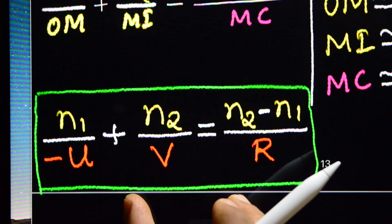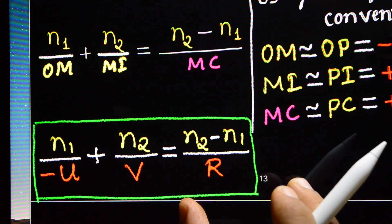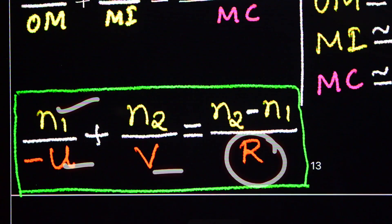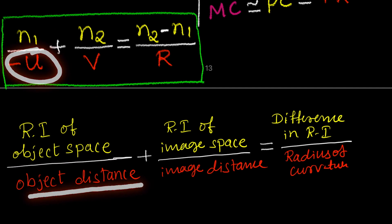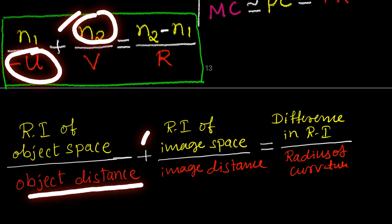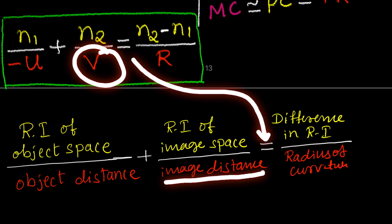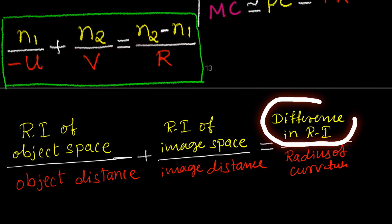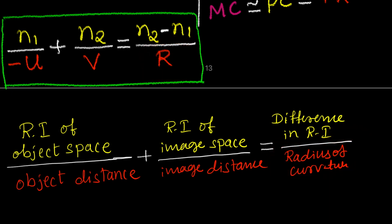This is the relation between the refractive indexes, object distance, image distance, and radius of curvature of a spherical refracting surface: N1/U + N2/V = (N2 − N1)/R. Here N1 is the refractive index of object space, U is the object distance, N2 is the refractive index of image space, V is the image distance, and R is the radius of curvature of the refracting surface. This is your five-mark topic.